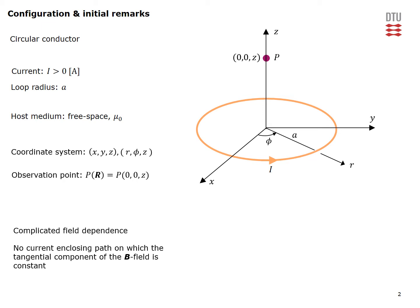In this case the field will depend in a rather complicated manner on observation coordinates. Obviously there is no current enclosing path on which the tangential component of the B field is constant. That means it will be very difficult to apply Ampere's law to get the B field for this particular configuration.